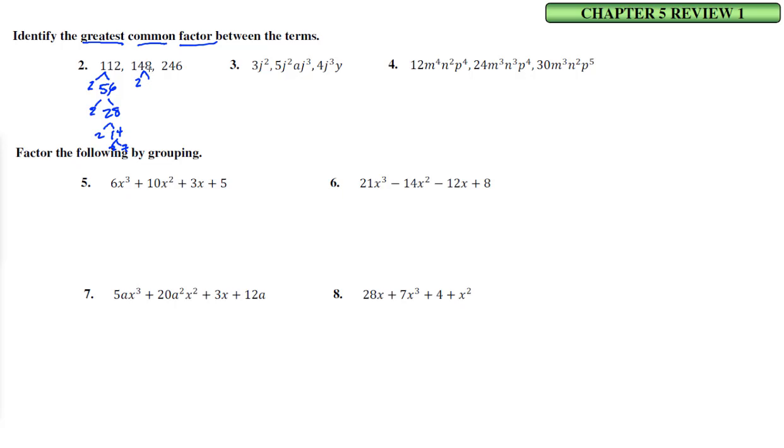148 is 2 and 74, that's 2 and 37. That's as far as we get there. And then 246 is 2 and 123, that looks like 3 and 41. So what is common? We have a 2 that's common amongst all of them. Do we have anything else? No, we don't even have a second 2. So the greatest common factor is the number 2.